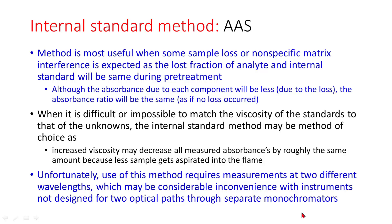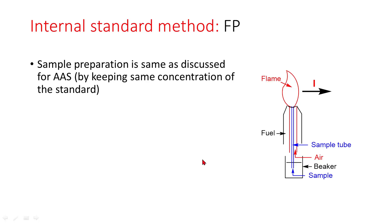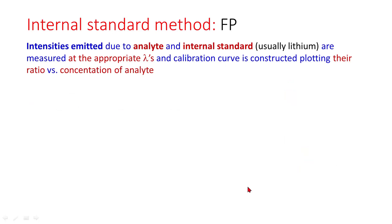In flame photometry, sample preparation is the same as discussed for atomic absorption, keeping the same concentration of the standard. Intensity emitted is measured. Intensity emitted due to analyte and internal standard — usually lithium — are measured at the appropriate wavelengths, and a calibration curve is constructed plotting their ratio versus concentration of analyte.